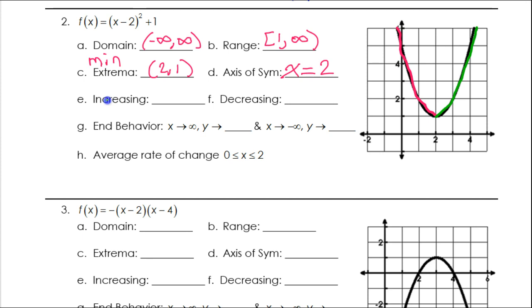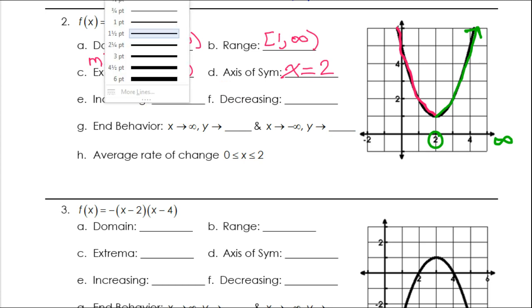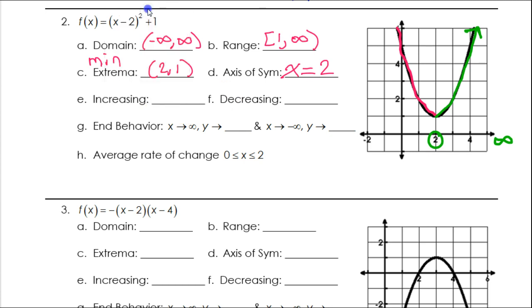When they are asking for these intervals, they want x values. So the increasing part goes from an x value of 2, and over here it doesn't stop — it goes forever — so it's going to be 2 to positive infinity. So increasing from 2 to positive infinity. Leave it round, because to the left of 2 it's decreasing, to the right of 2 it's increasing, and right at 2 it's neither.